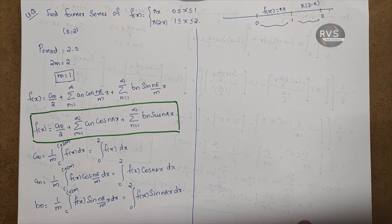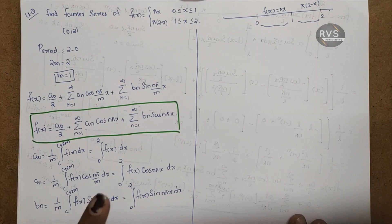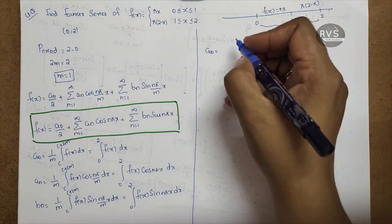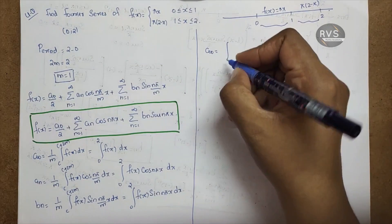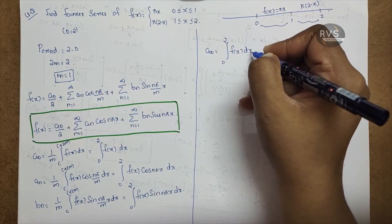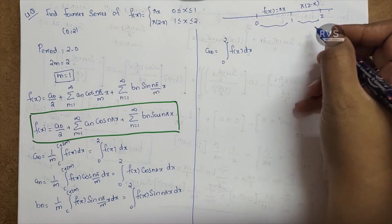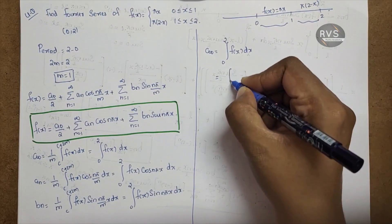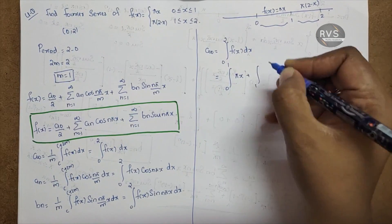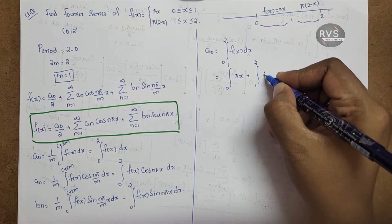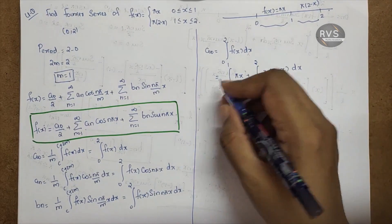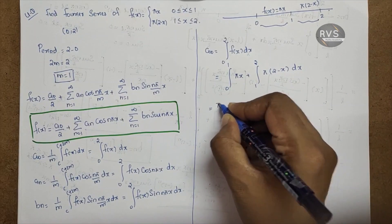If we substitute f(x), a0 equals 1 by m into integral 0 to 2 of f(x) dx. Since the integral is split into two functions over [0,2], we take the integral from 0 to 1 of πx and from 1 to 2 of π(2 minus x). Two integrals: 4π is common. The integral of x is x²/2.